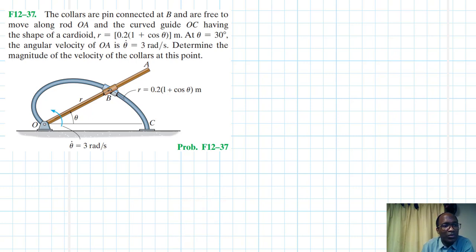This problem is from Engineering Mechanics Dynamics, 14th edition by R.C. Bela. I've been asked to find the magnitude of velocity at θ = 30°.